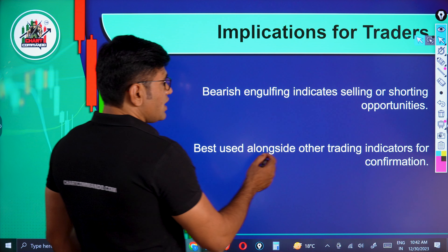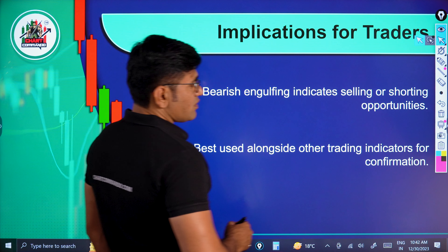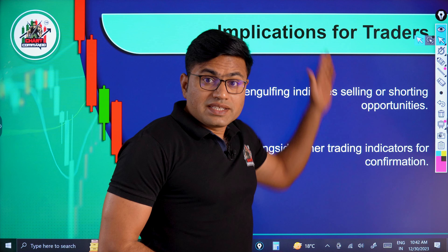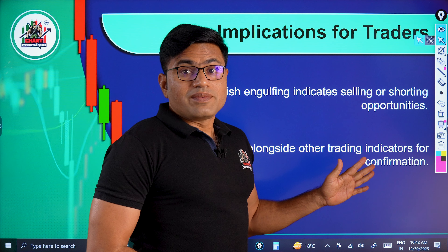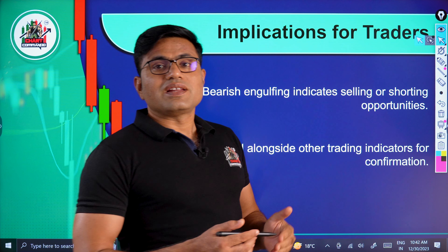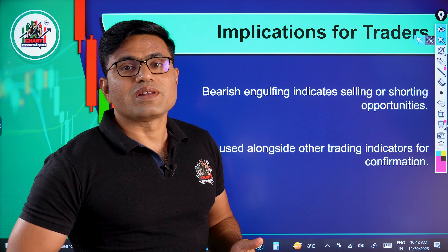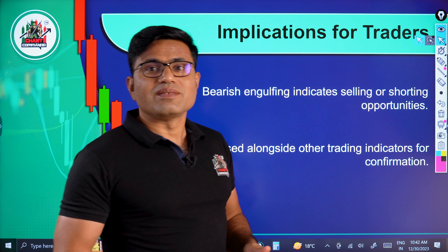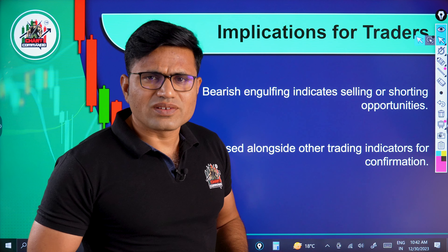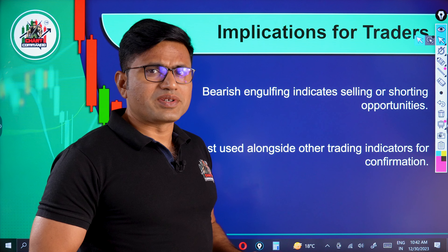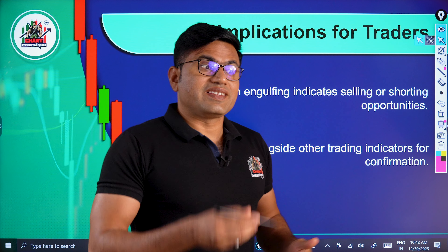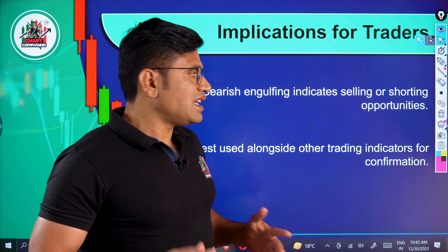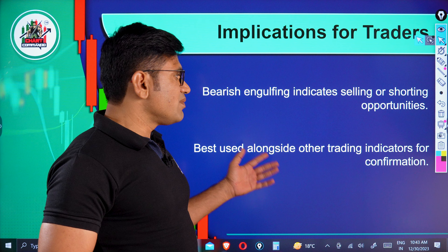It's best used alongside other trading indicators for confirmation. For the engulfing pattern, we use support and resistance, a trend line, an RSI indicator, and confirmation from RSI. We also use chart patterns and breakdowns as confirmation.